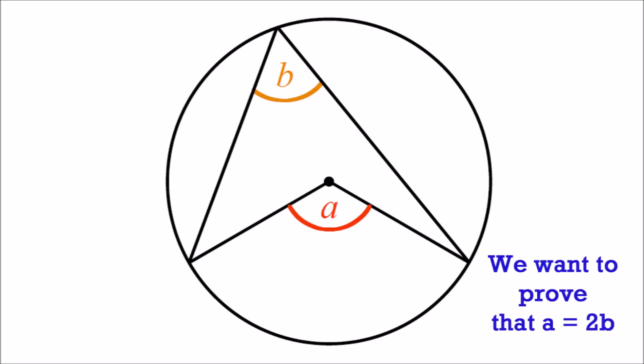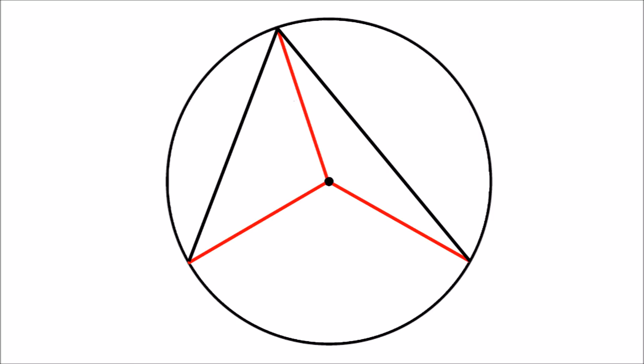We add a radius to form two isosceles triangles. We draw a line from the centre to the point on the circumference above the centre. This is a radius, as are the other two lines from the centre to the circumference. Because all radii in the same circle are equal, two isosceles triangles have been formed.